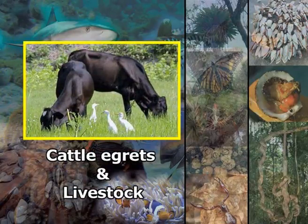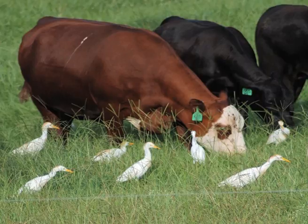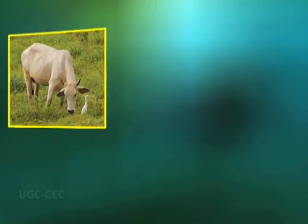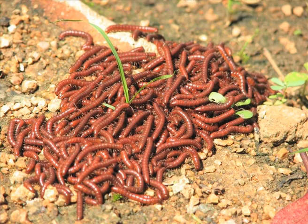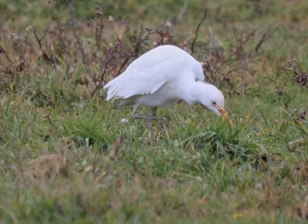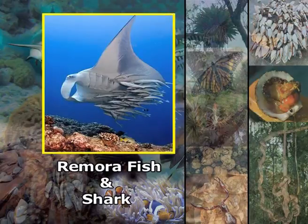One of the most popular examples of commensalism is the relationship between cattle egrets and livestock. Cattle egrets forage in fields among cattle or other livestock. As cattle, horses and other livestock graze on the field, they stir up various insects. As the insects are disturbed, the cattle egrets following the livestock catch and feed upon them. The egrets benefit from the relationship because the livestock helped them find their meals, while the livestock are typically unaffected.